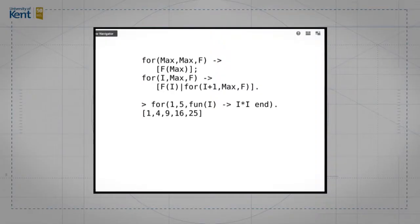Higher order functions are functions that either return functions or they have functions as their arguments. This is a higher order function that becomes a for loop, and it consists of two clauses. For max, max, F returns the list F of max. For I, max, F returns the list F of I, that's the head of the list, and the tail of the list is for I plus 1, max, F. So it's a very simple function, and it's called as in the example on the slide.